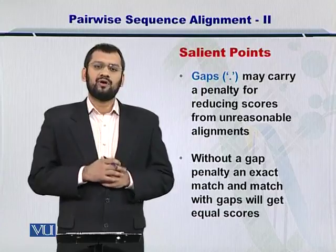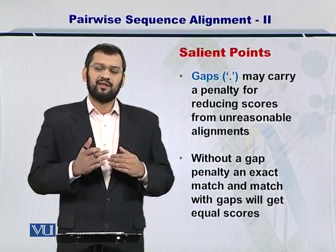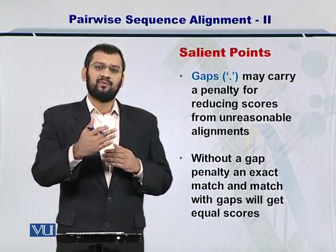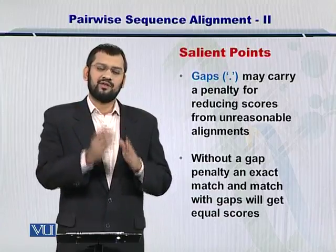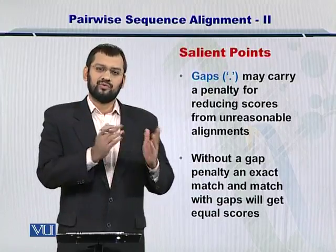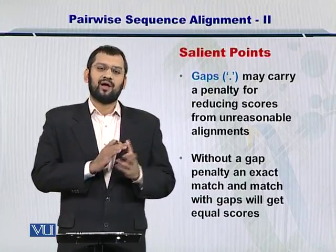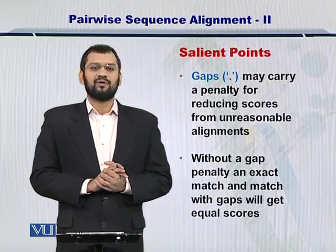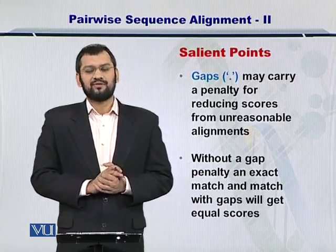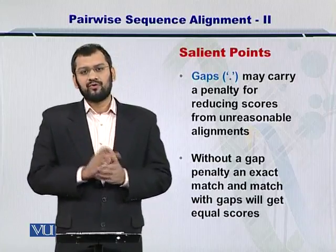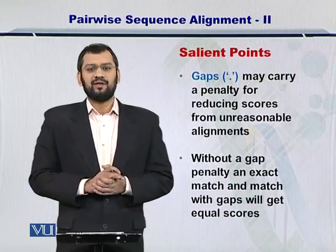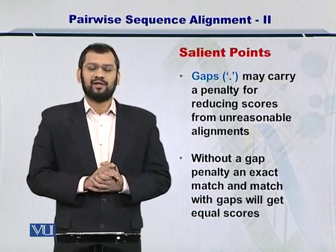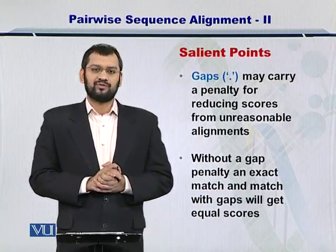If we do not give a negative score, then an exact match will obtain a score equal to an alignment where you have only one gap in the comparison of the two sequences. Therefore, gaps need to be given a negative score whenever you are aligning two sequences.